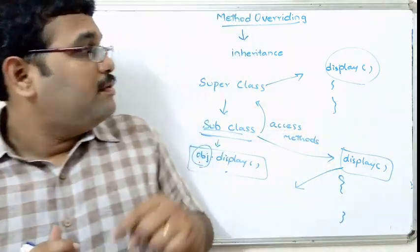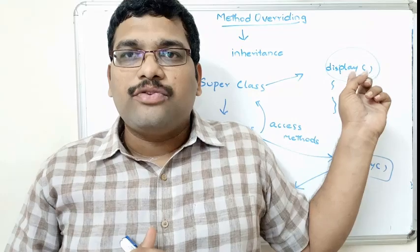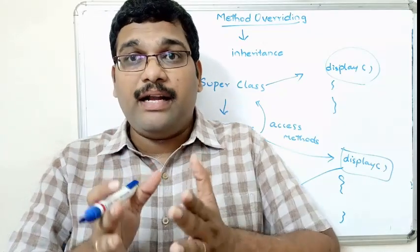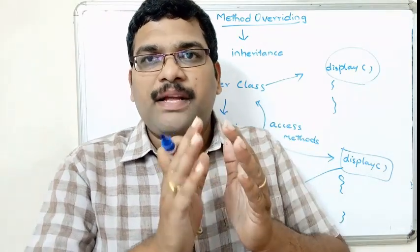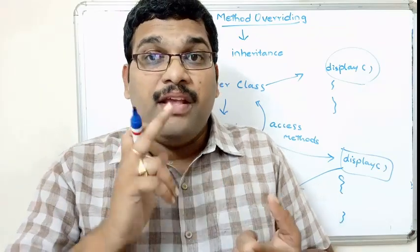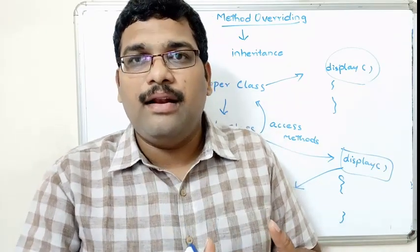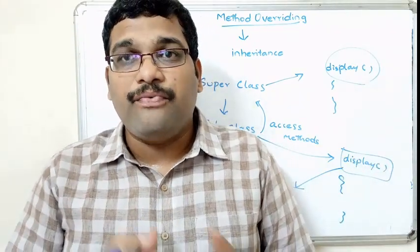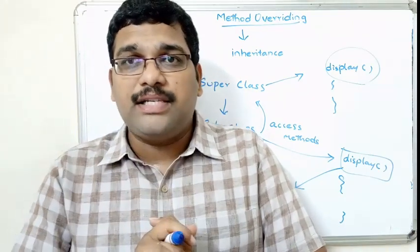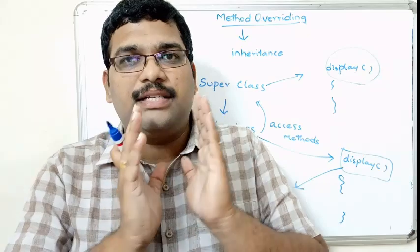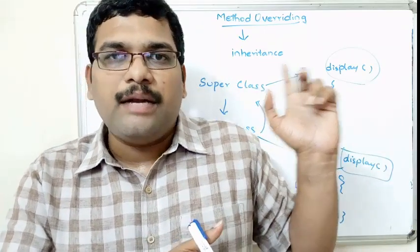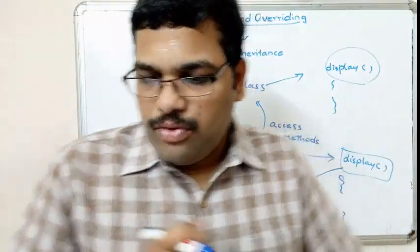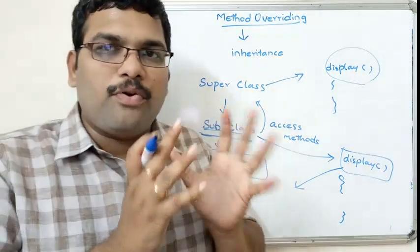One more constraint: static methods cannot be overridden. Any non-static method can be overridden, but if that method is a static method, it cannot be overridden. Second, if the method is declared as final in the superclass, that method cannot be overridden by the subclass. This is something we have seen in the keywords section.